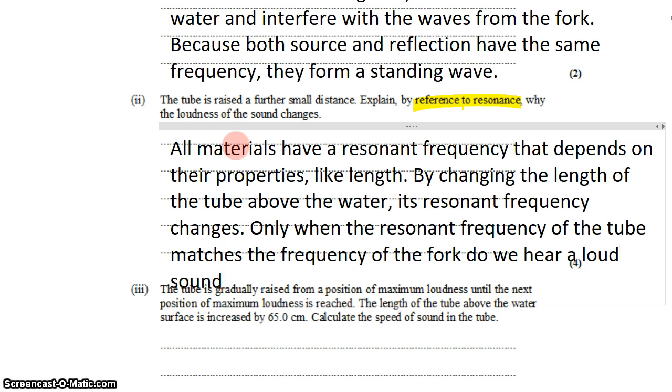By changing the length of the tube above the water, its resonant frequency changes. Only when the resonant frequency of the tube matches the frequency of the fork do we hear a loud sound. So as we pull the tube out of the water, its resonant frequency changes around between different values, and it's only when the resonant frequency of the tube matches that of the fork that we hear the loudest sound. If they don't match, the sound is quieter.